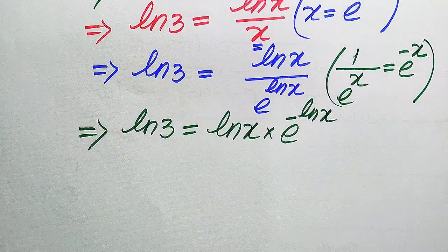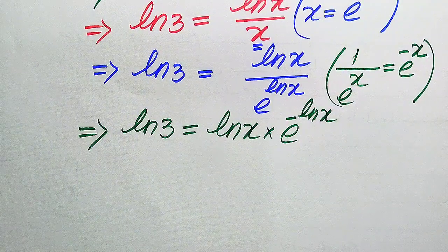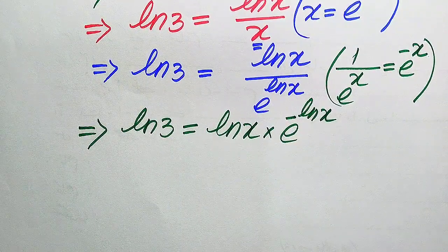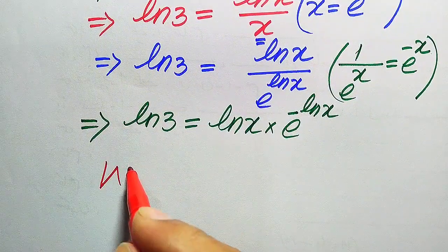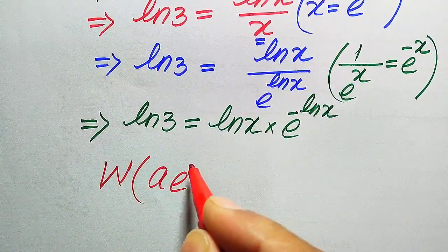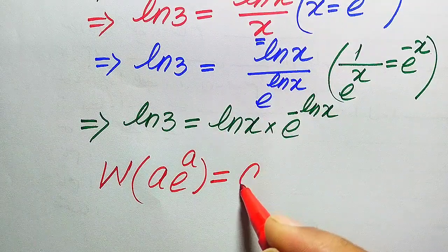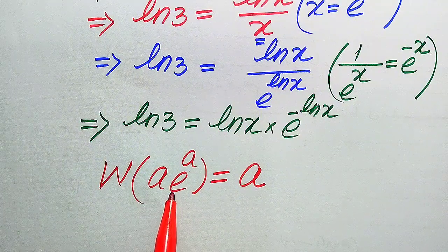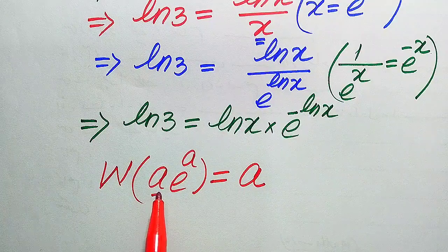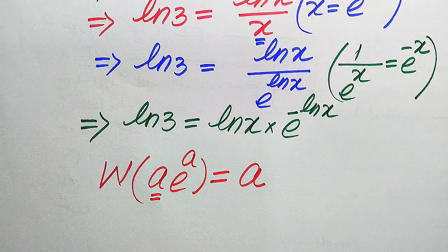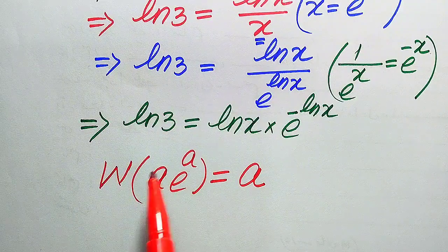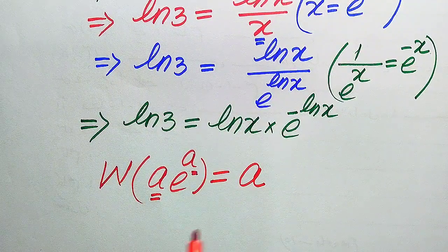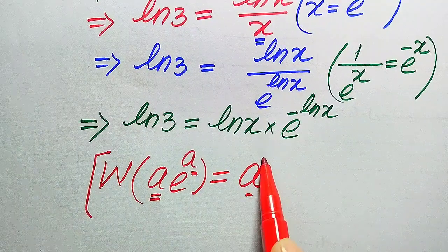Here we use the Lambert W function. The Lambert W function is defined as: W(a·e^a) = a. We apply this to a function where one term is exponential and its exponent is multiplied by another term. The output of this function is just the exponent of e.